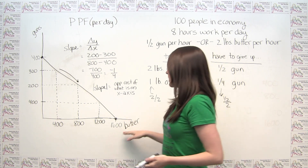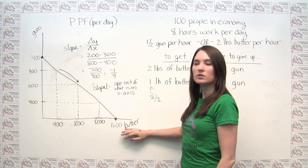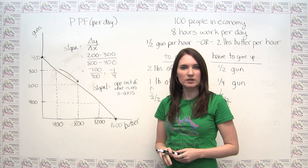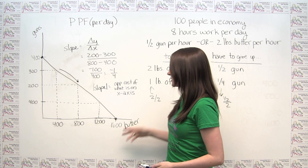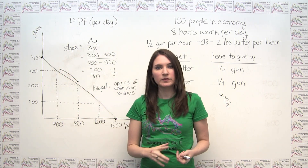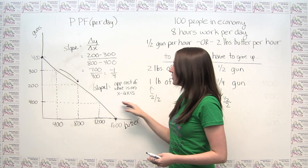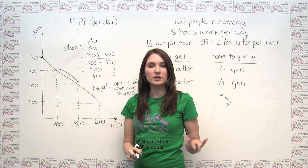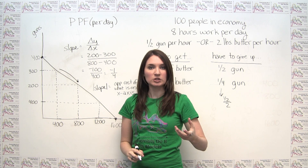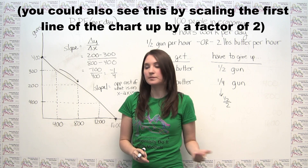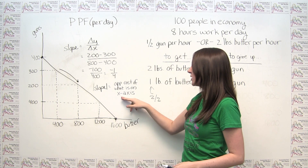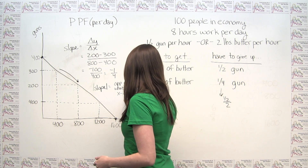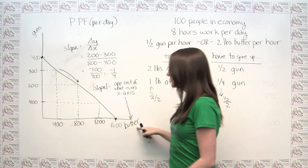If you wanted to think about the opportunity cost of one gun rather than a pound of butter, one option would be to redraw your production possibilities frontier with guns on the horizontal axis and butter on the vertical axis. Alternatively, you could notice that if the opportunity cost of a pound of butter is one-fourth of a gun, then the opportunity cost of one gun is four pounds of butter — they have a reciprocal relationship. What you want to keep in mind is that the slope represents the opportunity cost specifically of the item on the x-axis.